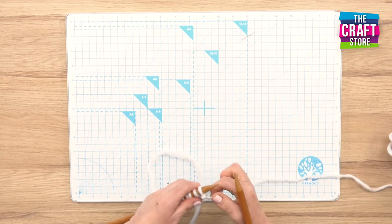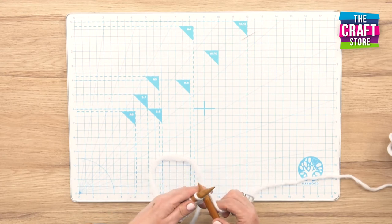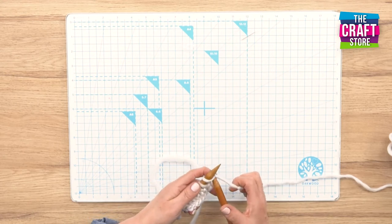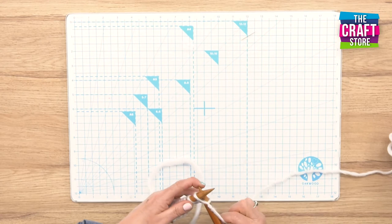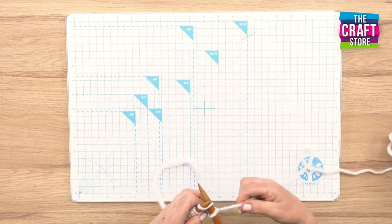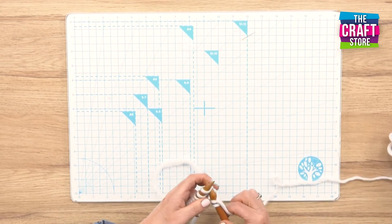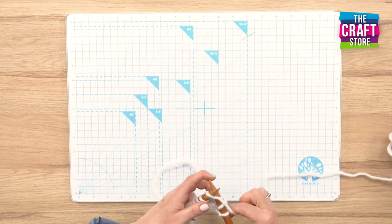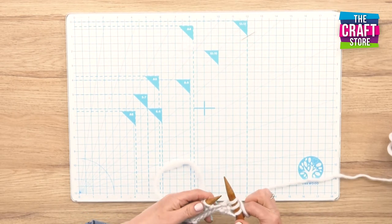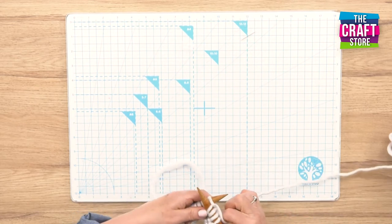So we're going to go again through, round and off. Through, round and off. Through the stitch, round it and off. Through the stitch, round and off.